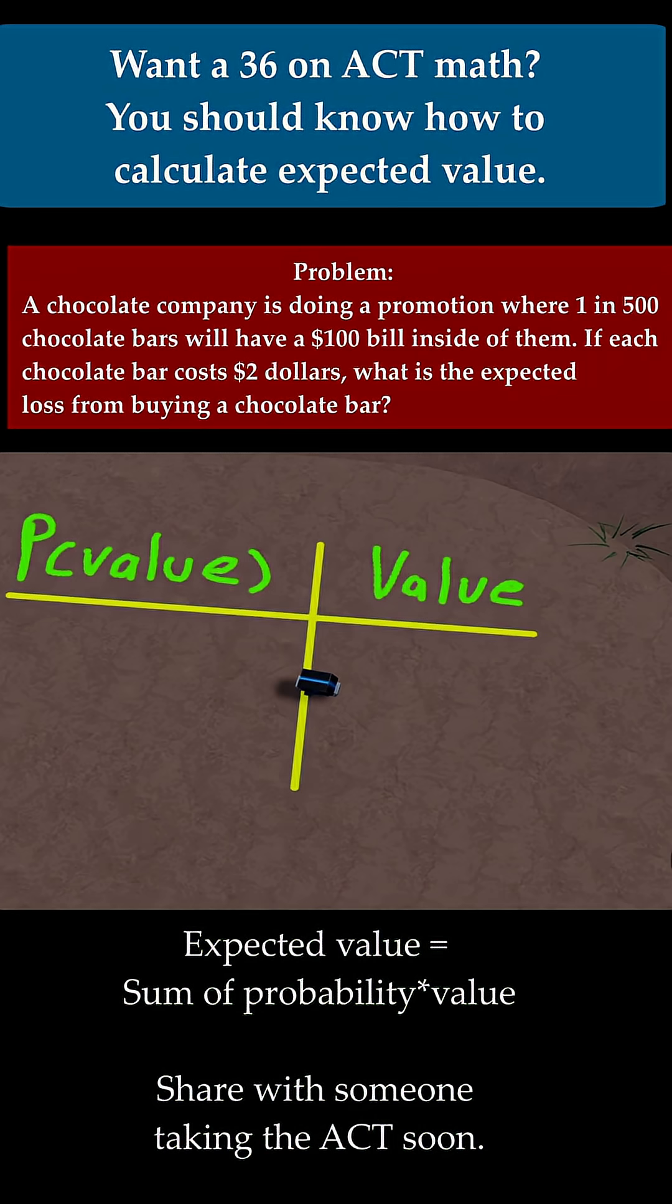This third problem says, a chocolate company is doing a promotion where 1 in 500 chocolate bars will have a $100 bill inside of them. If each chocolate bar costs $2, what is expected loss from buying a chocolate bar?